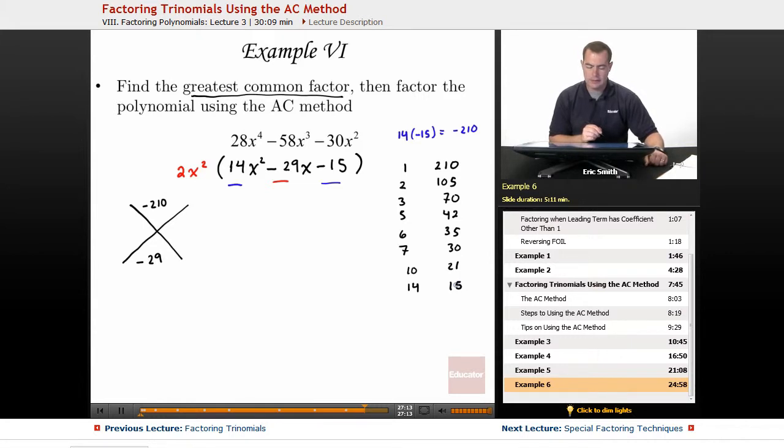Okay, now that I have a list of a bunch of different numbers, they need to multiply to give us a negative 210. That means one of these numbers will be negative and one of them will be positive. They will add to be a negative 29, so I know the larger number must be a negative. It's the only way we'll get a negative 29 when adding. Okay, comb over the list very carefully. The one that will do it will be this pair right here, the 6 and the 35.